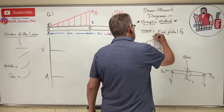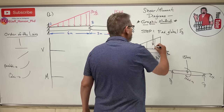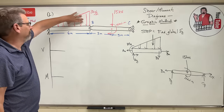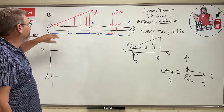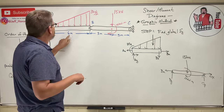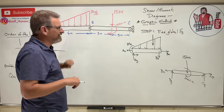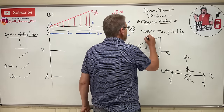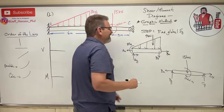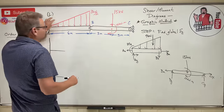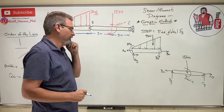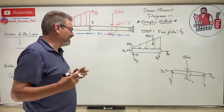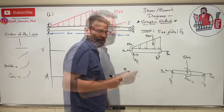Now for the distributed load: I want to convert it into an equivalent concentrated load. For a distributed load, the magnitude equals the area of that shape. It's a triangle: 6 × 3 = 18, divided by 2 gives 9 kN. So the equivalent concentrated load is 9 kilonewtons.